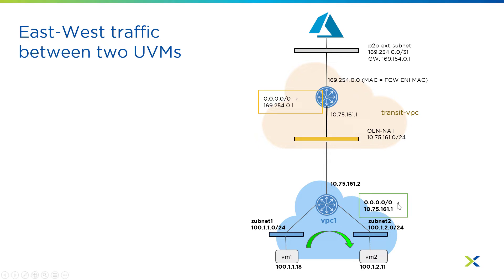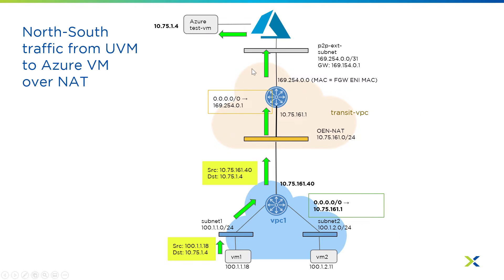This is a pretty easy use case in terms of getting out to a native Azure resource, or this could also be going back to on-prem. We have this 10.75.1.4 native Azure VM. VM1 wants to talk to it, so its source is the IP of the VM inside of the VPC, and its destination is the IP of the VM. When it gets to the logical VPC router, we encapsulate the traffic and then change the source to the VPC source NAT — so it's going to be .40 here — and then we'll send the traffic out. It will also know how to get back to this 161.40 because its native Azure IP.